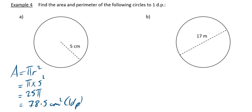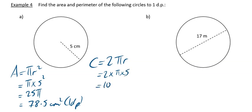It also asks you to find the perimeter. The perimeter of a circle is the circumference. C is equal to 2πR, so that's 2 times pi times 5. If you do that on your calculator it gives you 10π. Press SD and to 1 decimal place you're going to get 31.4. And that's going to be centimeters - it's just length - to 1 decimal place.